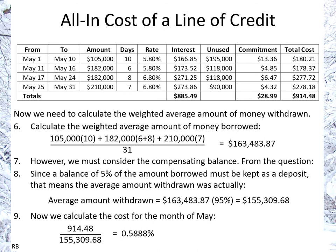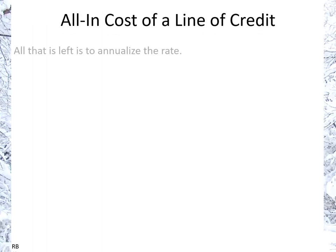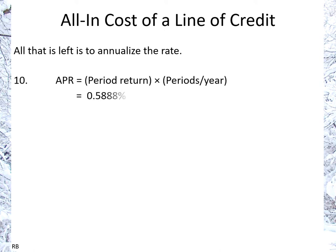A small note: if you have an intermediate calculation, it's good to keep as many significant figures as you can, because your final answer can drift quite far from the correct answer if you don't. Given our calculators, we have the capacity to keep all the significant figures we need, so we're going to use 0.5888%. Now all we have left is to annualize that rate. The APR is simply the period return times the number of periods per year, using 365 divided by the 31 days in this period.